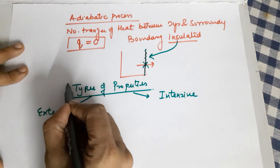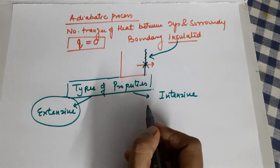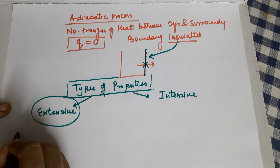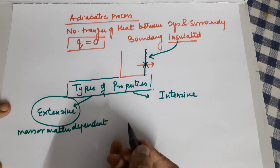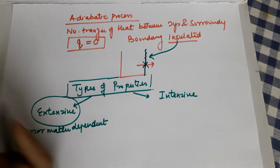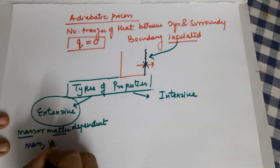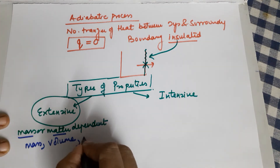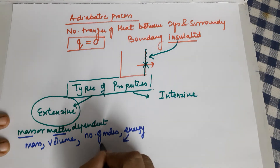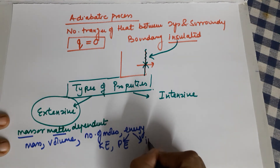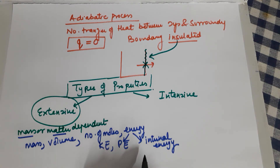Moving to types of properties in thermodynamics: the first category is extensive properties. These are mass or matter dependent, meaning if the amount of the system changes, these properties change. Properties that depend on mass include: mass itself, volume, number of moles, and any type of energy — kinetic energy, potential energy, and internal energy (which will be our next topic). All types of energy fall under extensive properties.